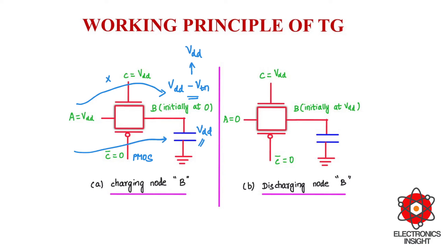NMOS alone cannot charge the output to VDD, but through PMOS it is capable of passing VDD. Therefore we can say that the transmission gate has successfully passed strong one.